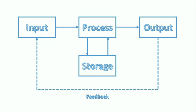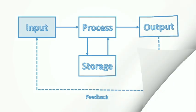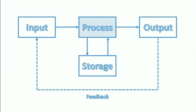So we've looked at inputs, outputs, and storage — here's a diagram you'll need to learn. Data goes into the input section via a mouse, sensor, or any input device. The data is then processed, and from that process two things can happen: either the data is stored, or it is output.